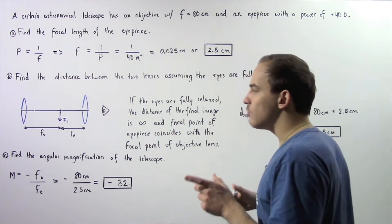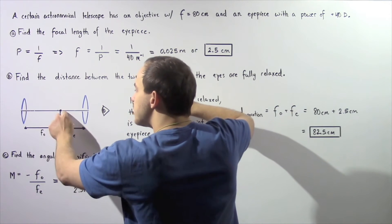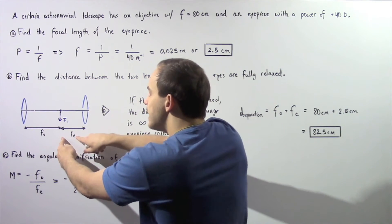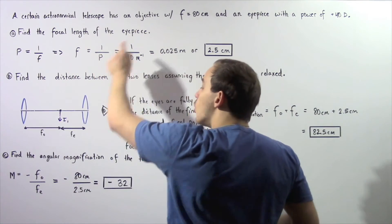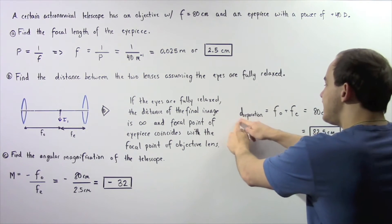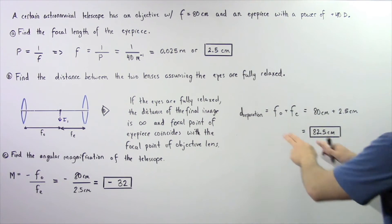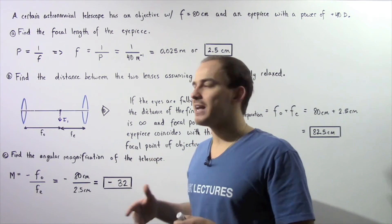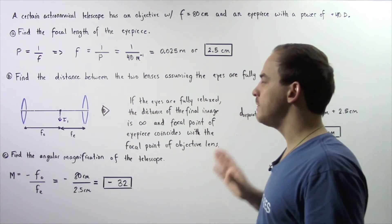That is shown in the following diagram — note this is not drawn to scale. The distance from the objective lens to the shared focal point is given by the objective focal length, and the distance from that same point to the eyepiece is given by the eyepiece focal length. So the separation distance D between our two lenses is equal to the sum of the two focal lengths: 80 centimeters plus 2.5 centimeters gives us 82.5 centimeters, which is the distance between the two lenses when the eye is fully relaxed.